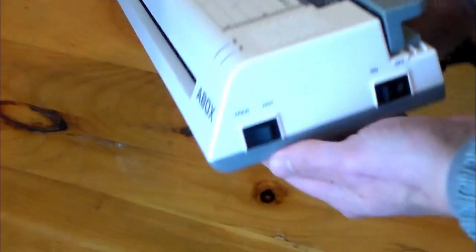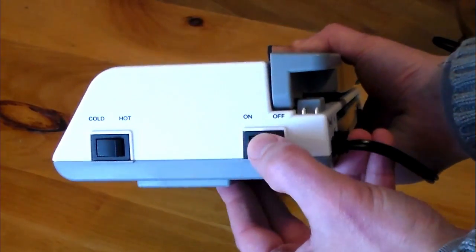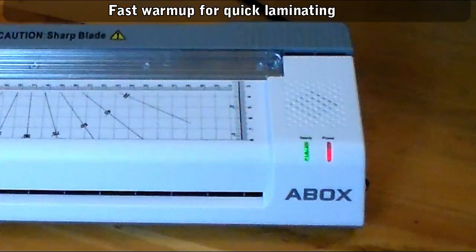And now the main feature, the laminator. It has a hot and cold mode, so for thermal laminating it heats up in just a couple minutes after you flip the switches and the light turns green.